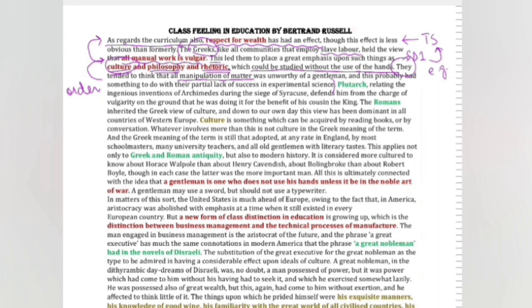And this probably had something to do with their practical lack of success in experimental science. In dho jumlok ke anndar hume writer ne Greek society ki misal dhe ke na sirf main idea semjha ya, respect for wealth joh hai woh kiishe education ko effect kerthi hai. Plutarch, relating the ingenious inventions of Archimedes during the siege of Syracuse, defends him from the charge of vulgarity on the ground that he was doing it for the benefit of his cousin the king.